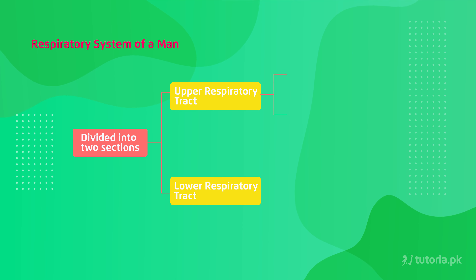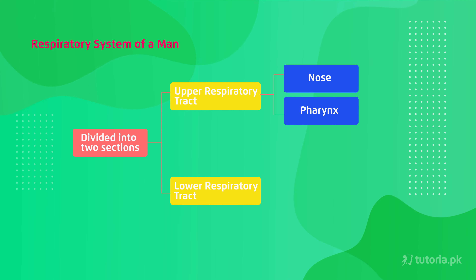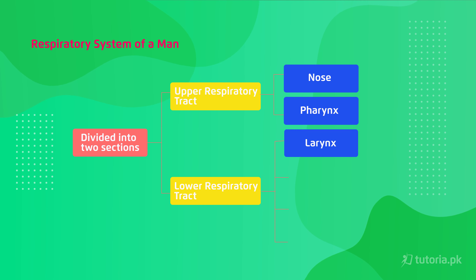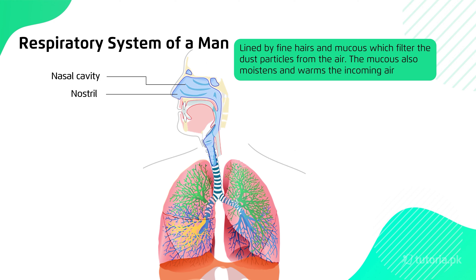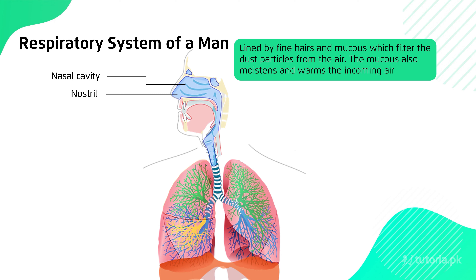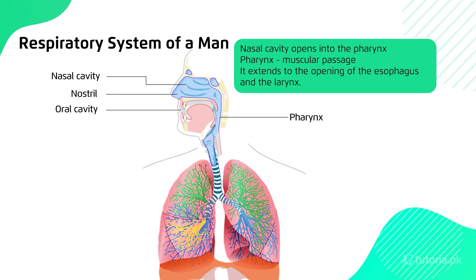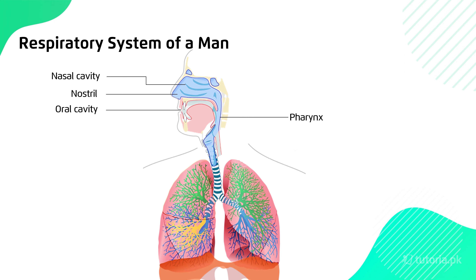The upper respiratory tract includes our nose and pharynx. Our passage comes to the oral cavity. The oral cavity and nasal cavity both open into the pharynx. The pharynx is a muscular passage that extends to the esophagus and larynx opening.